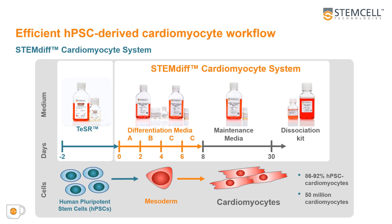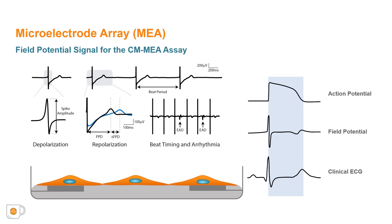Microelectrode array can be used to measure the excitability of cardiomyocytes. The excitability is measured as a field potential, which is similar to an action potential observed at the single cell level and similar to a clinical ECG. They share some similar phases, for example, a sharp upstroke or depolarization phase. After the depolarization phase, beat timing and arrhythmias can be measured quite easily in a microelectrode array.